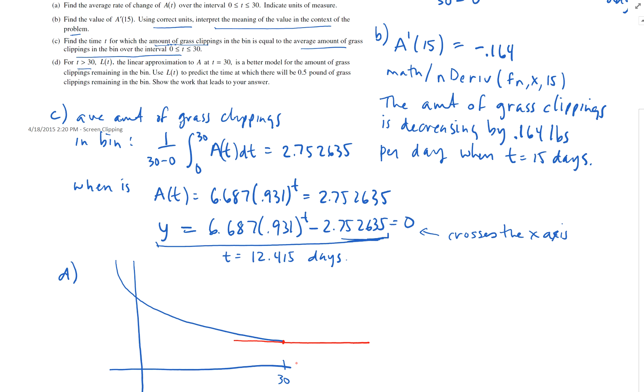So this tangent line is a better approximation for t greater than 30. And it says use that tangent line to predict the time when there will be 0.5 pounds of grass. So this is A of t over here. So I'm going to go this is 0.5. So we're going to put this in for my y value and figure out how many days it's going to be over here. And figure out what t would be. So this is A of t.